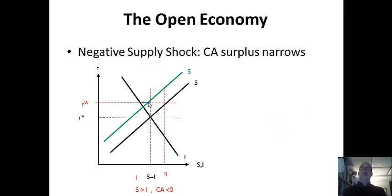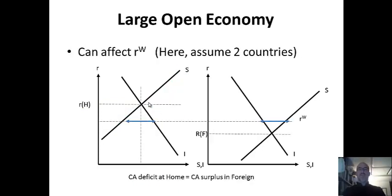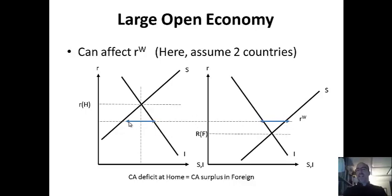That's for the small open economy — a small economy does not affect the world price. Now for a large open economy, we actually see the world interest rate change. What makes a large economy is that it affects the world price. To make it simple, here are two countries: one with a deficit and one with a surplus. The arrows are the same length — one country's borrowing is exactly the same as the other country's lending. The deficit at home equals the surplus in the foreign country, and they actually benefit from this.